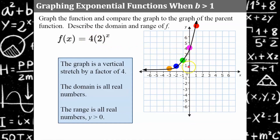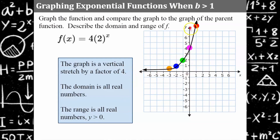The parent function will always have a y-intercept of 1, and here it's multiplied by four — there's your factor of four. The domain is all real numbers, meaning all x inputs can be any real number. The range is all real numbers greater than zero — the y value will never be less than or equal to zero, so all range values are above the x-axis.